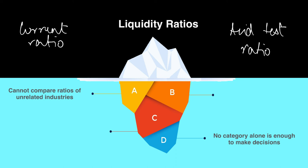Within liquidity ratios, inventory plays a vital role — the difference between the current ratio and acid test ratio is the treatment of inventory. The problem with inventory is that there is no one stagnant amount; it keeps changing over the year. You may order more, sell more, suppliers may charge higher prices, or give bulk discounts, so the value of inventories keeps changing, causing your liquidity to keep fluctuating.